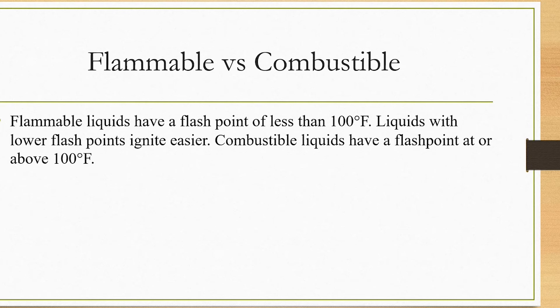Flammable liquid has a flash point of less than 100 degrees Fahrenheit; liquids with lower flash points ignite more easily. Combustible liquid has a flash point at or above 100 degrees Fahrenheit. This shows the limit between flammable and combustible liquids: flammable liquid has a flash point less than 100°F, and liquids with lower flash points ignite more easily, while combustible liquid has a flash point at or above 100°F.